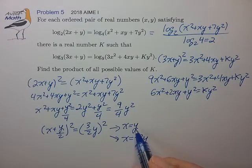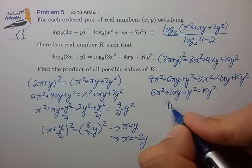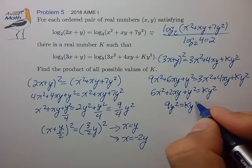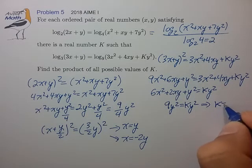Let's plug in x is equal to y. We find then that this left side is 9y squared, which then means that k has to equal 9.